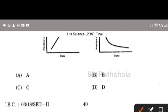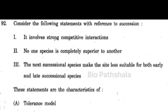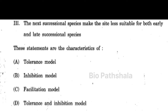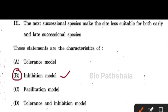Next question: consider the following statements with reference to succession — it involves strong competitive interactions; no one species is completely superior to another; the next successional species make the site less available for both early and late successional species. These characteristics are of option number B — the inhibition model.